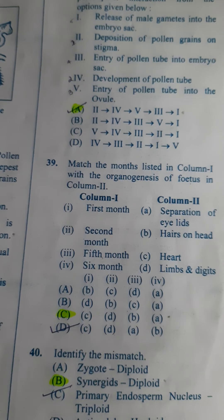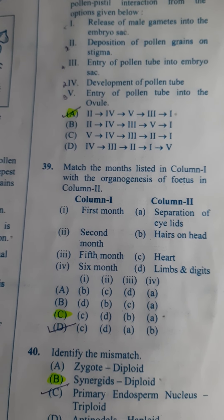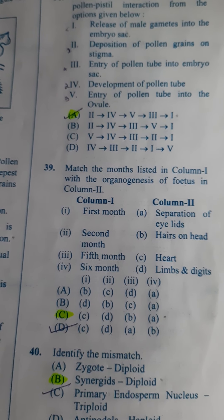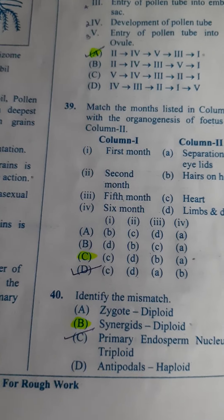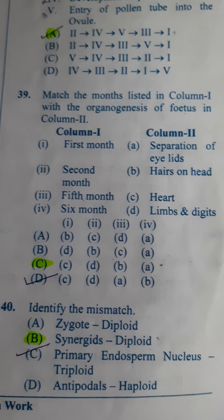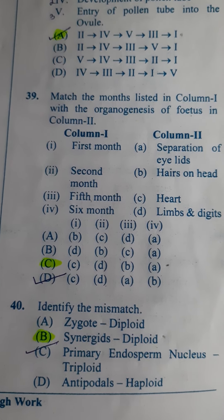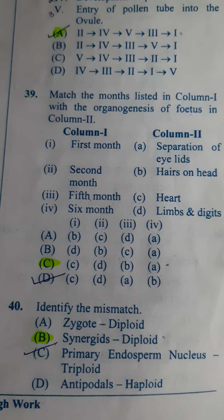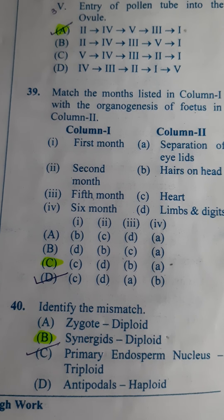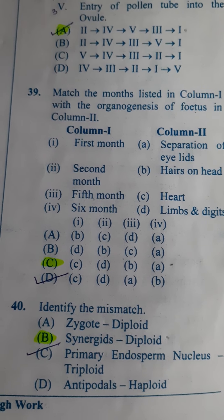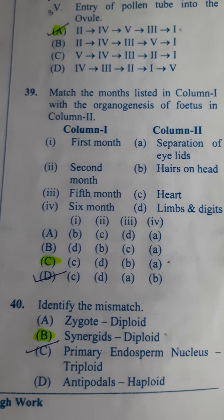Next: Match the month listed in column 1 with the organogenesis of the fetus in column 2. First month — you will get the heart; second month — limbs and digits; fifth month — hair on the head; sixth month — separation of eyelids. So the correct answer is C.